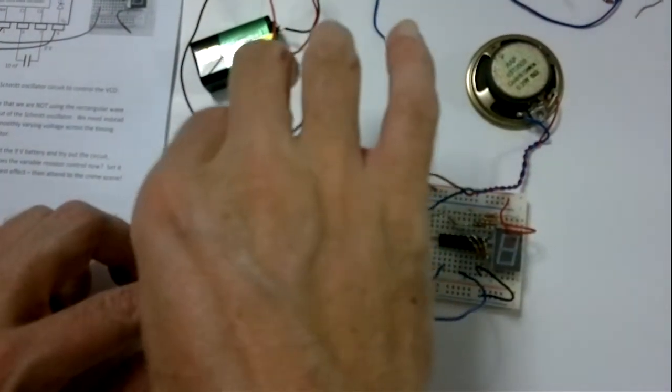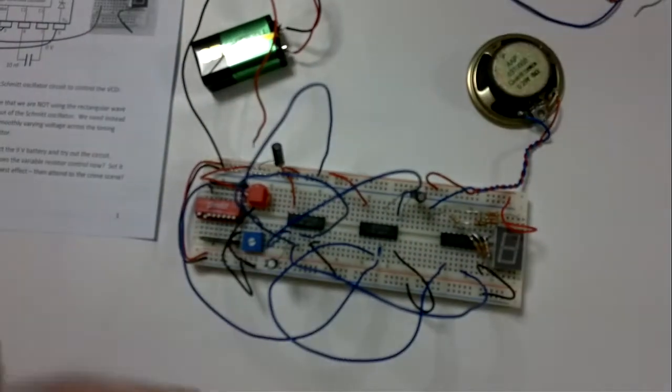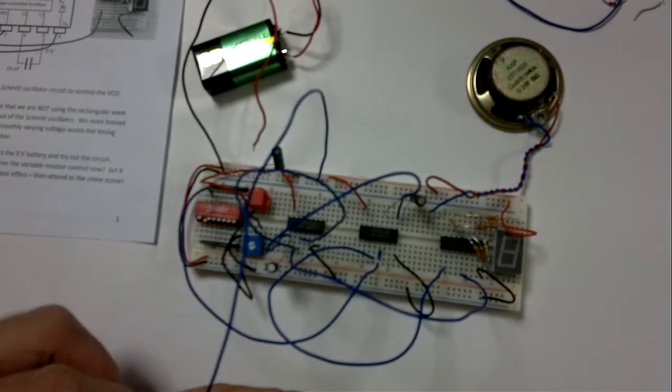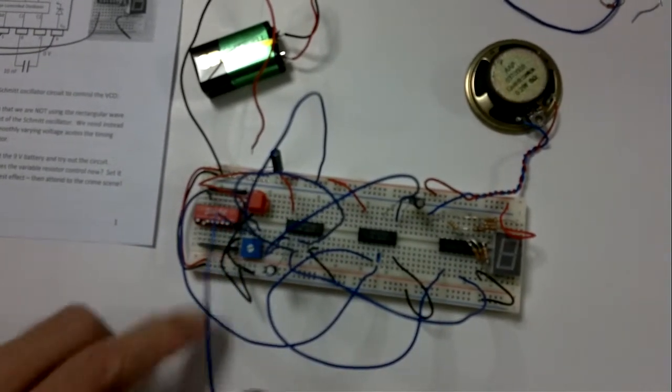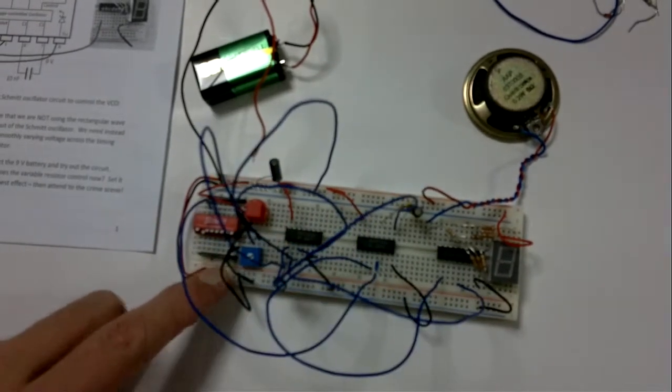Let's do that then. So that's going to go from the output of this 4093 NAND gate, it's going to go through this 1 meg preset resistor and come out at the wiper. So it's one end and then the wiper, and then that's going to go to the capacitor.